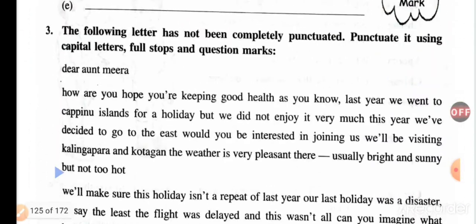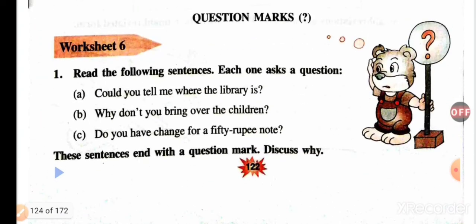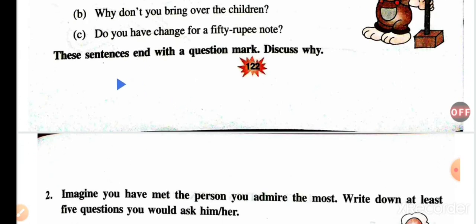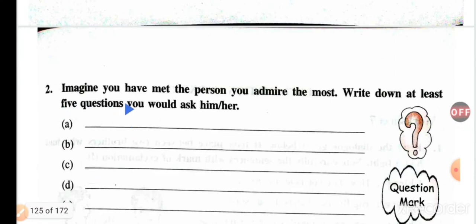Question mark. 'Could you tell me where the library is?' — it's a question, so you put a question mark here. 'Why don't you bring over the children?' — question mark. 'Do you have change for a 50-rupee note?' — question mark. These sentences end with a question mark. Discuss why. It's simple — they are questions, so a question mark has been used.